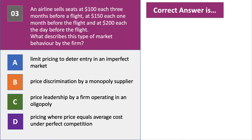Question three: an airline sells seats at $100 three months before a flight, at $150 a month before the flight, and at $200 the day before the flight. What type of market behavior describes this? Have a go at question three.